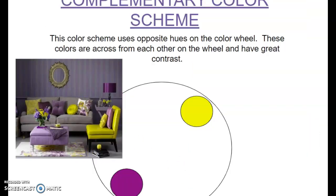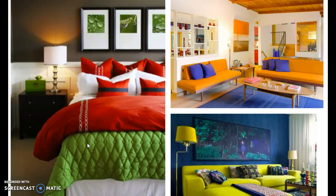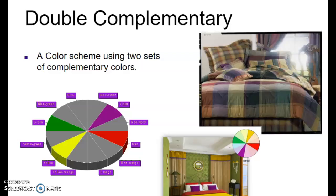Here's an example of a yellow and violet color scheme, and a few more examples as well. Double complementary is a color scheme that uses two sets of complementary colors — for example, red and green, and violet and yellow. It's pretty easy to see in this picture: you can see the yellow and violet and then the red and the green, seen here in more of a plaid style of bedding.